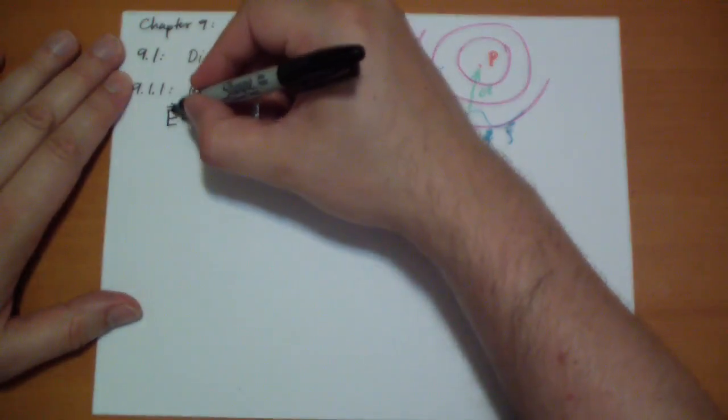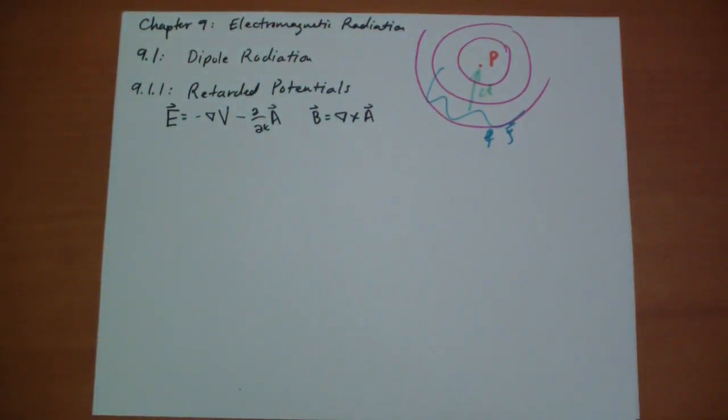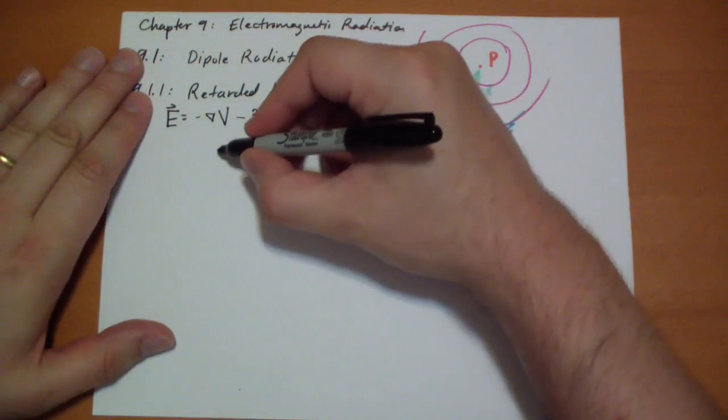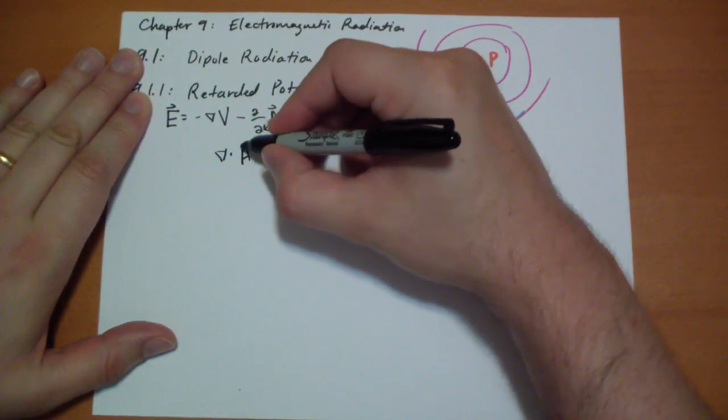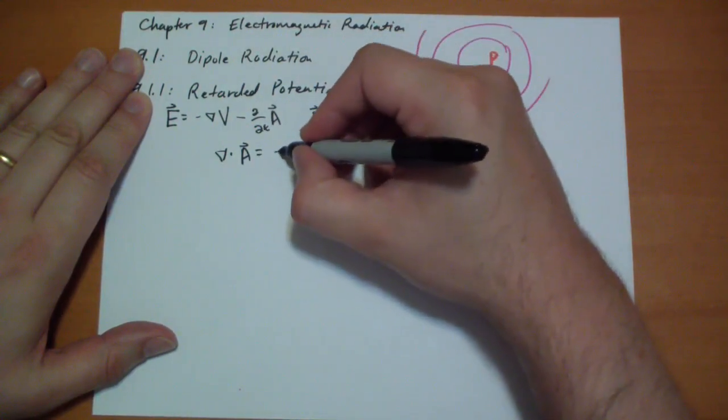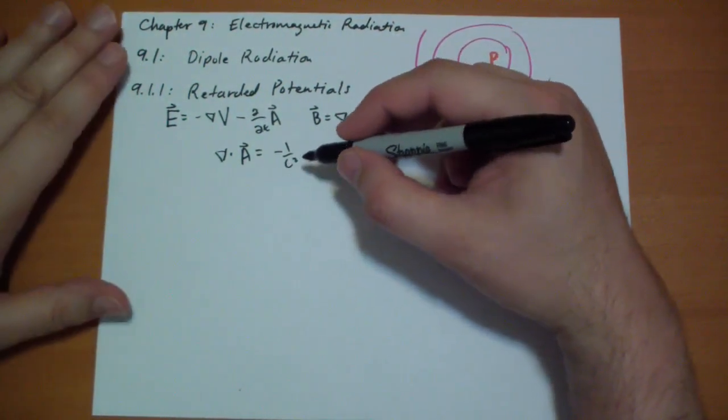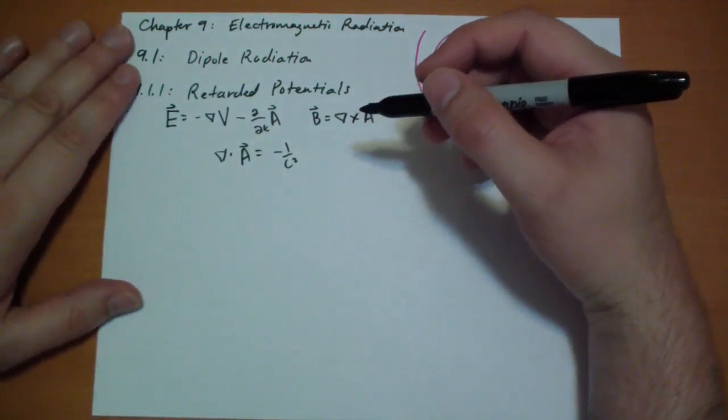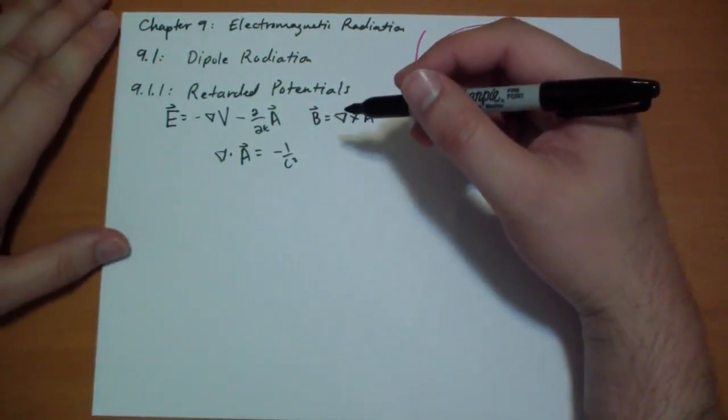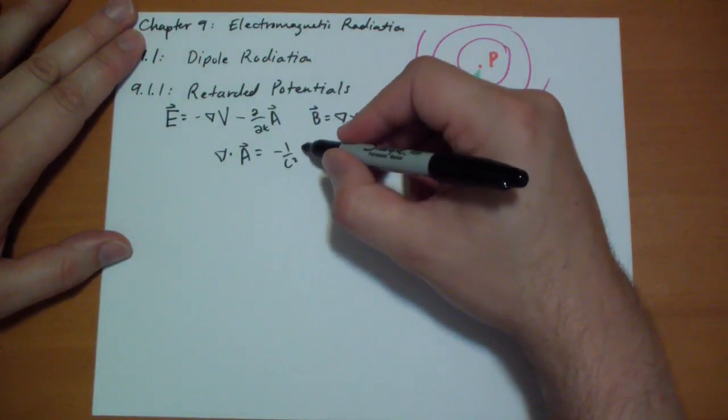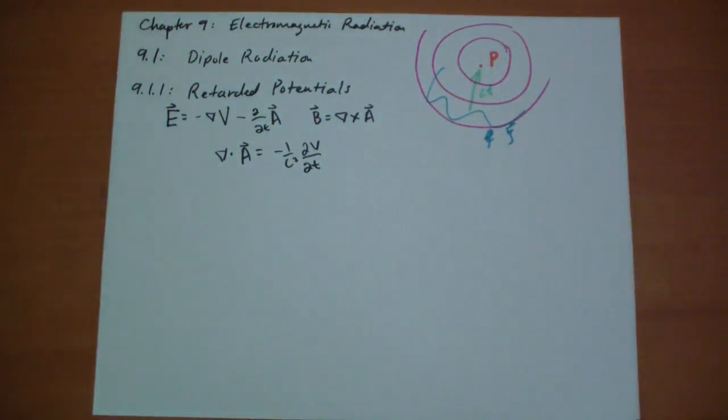That's true no matter what gauge you choose. We're going to use the Lorentz gauge because of its special properties. The Coulomb gauge we're going to throw right out because it assumes that you know everything all at the same time, which can't possibly be true. The Lorentz gauge sets the divergence of A-field to be equal to minus 1 over c-squared times the time derivative of the potential, the electropotential.